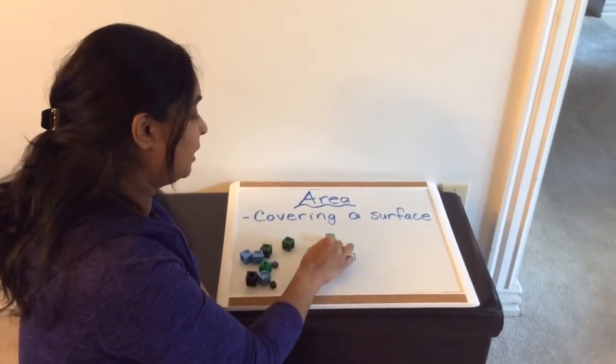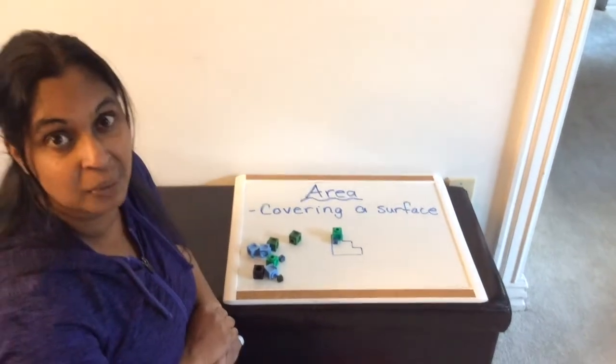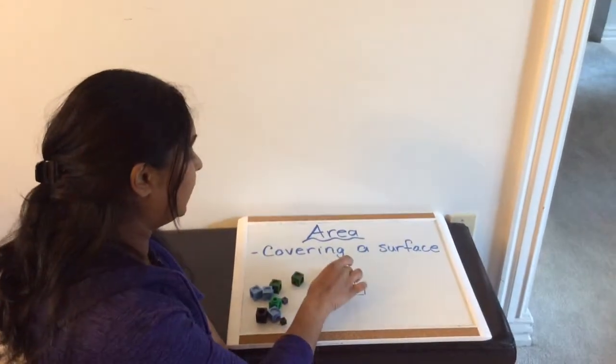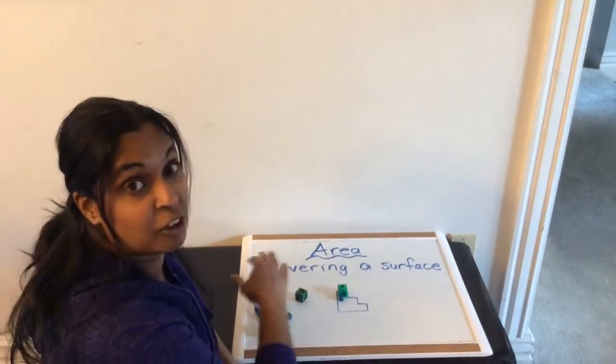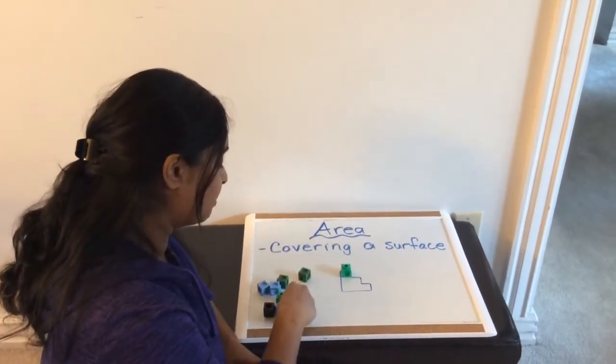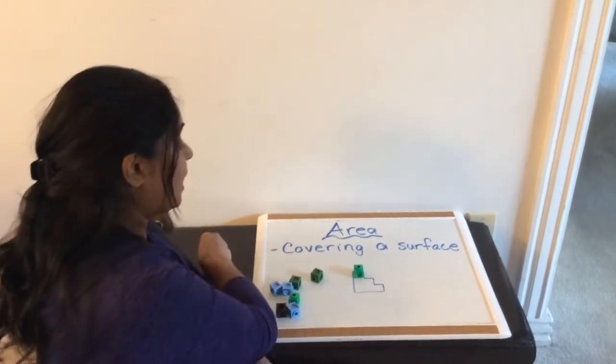I cannot switch to a different sized unit. If I'm going to use the big linking cubes, then I'm going to have to use that same size for the whole thing. So I'm actually going to get rid of these small ones because they're not the same size.